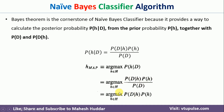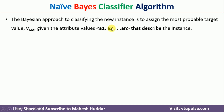So the final HMAP becomes ARG max of probability of d given h times probability of h, for all hypotheses in the hypothesis space. This is how the Bayes theorem looks. However, we cannot use this Bayes theorem directly to solve real-world problems, because in the real world the dataset contains multiple attributes. So we have to accommodate those attributes — let's say there are n attributes represented as a1, a2, ..., an — into the same formula.